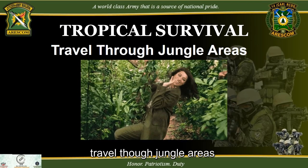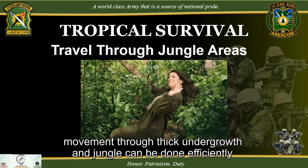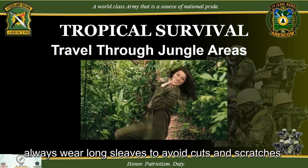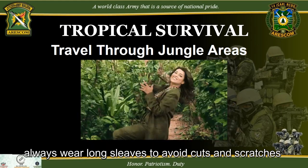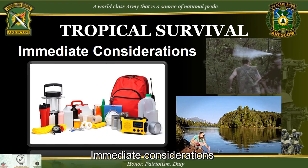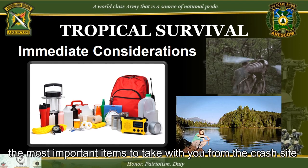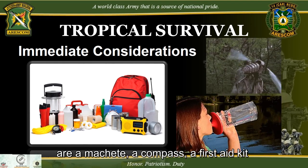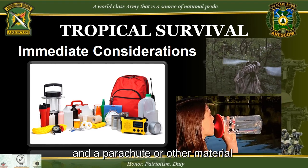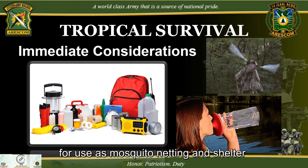Travel through jungle areas: with practice, movement through thick undergrowth and jungle can be done efficiently. Always wear long sleeves to avoid cuts and scratches. The most important items to take from the crash site are a machete, a compass, a first-aid kit, and a parachute or other material for use as mosquito netting and shelter.